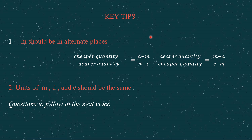Here is a tip to memorize the formula. When you write cheaper quantity upon dearer quantity, you write D minus M upon M minus C — notice that M alternates: it is at the back in the numerator and at the front in the denominator. If you reverse the formula to dearer quantity upon cheaper quantity, you write M minus D upon C minus M — and again M alternates, now at the front in the numerator and at the back in the denominator.